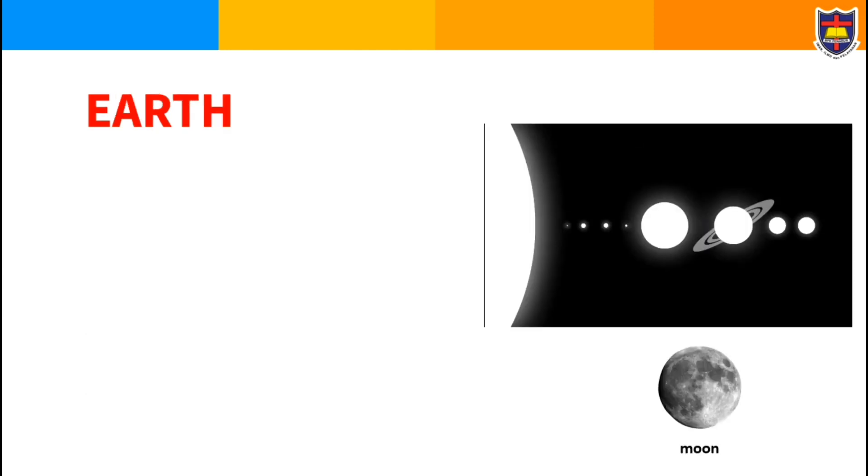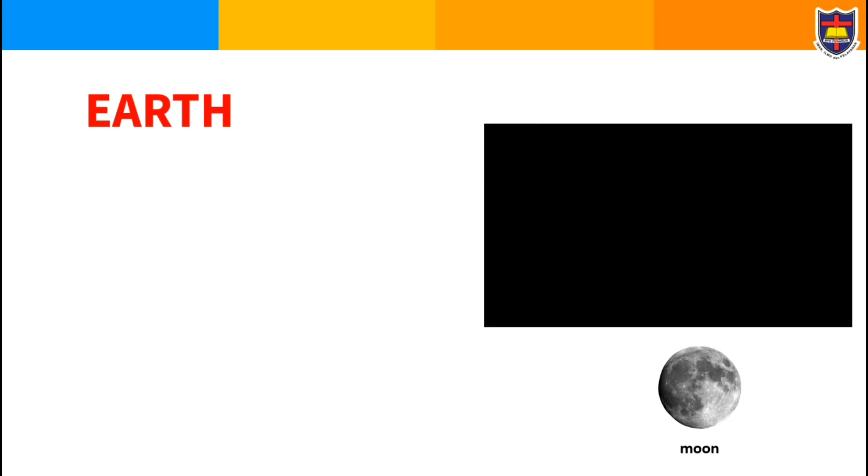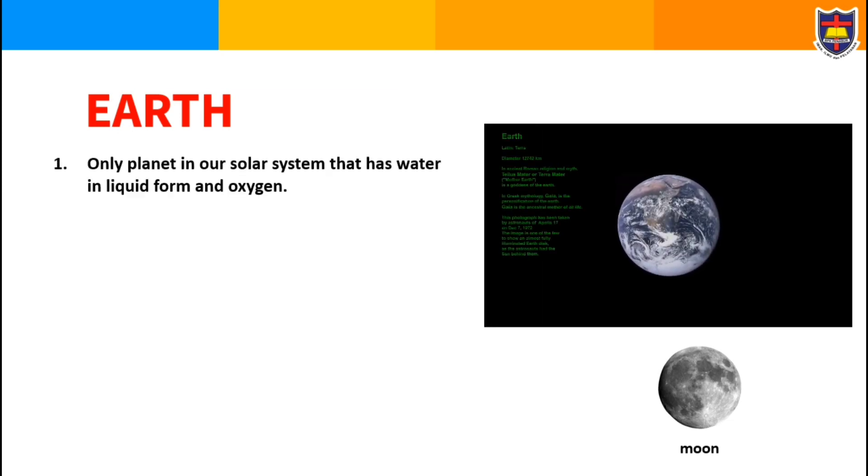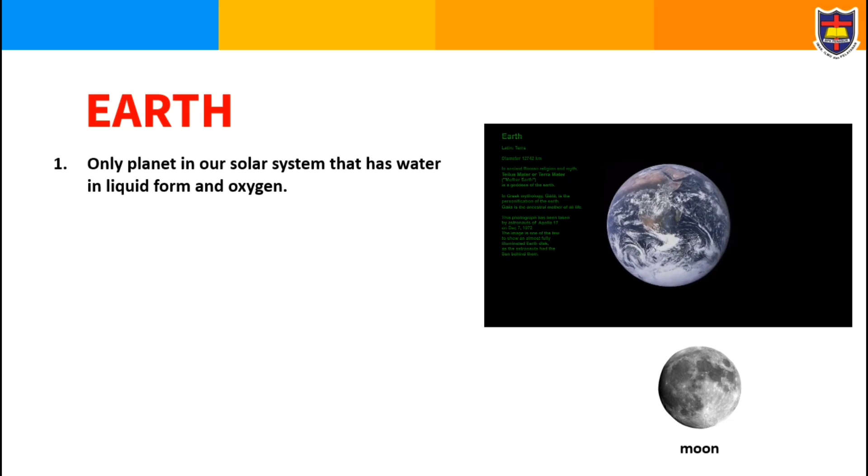The third planet is Earth, the only planet in our solar system that has water in liquid form and oxygen, so it means it supports life.